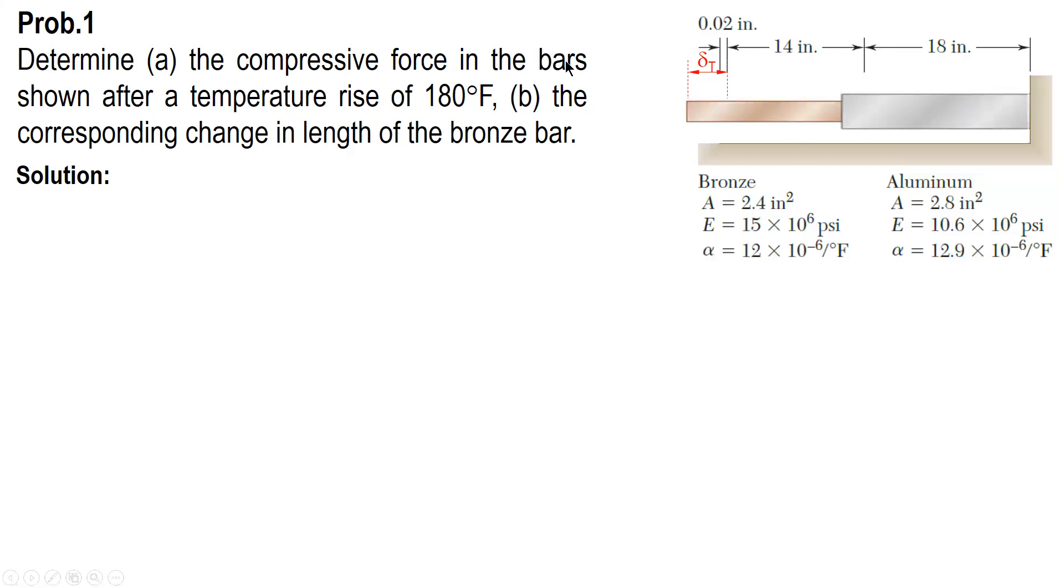And we can solve for delta T. The formula of delta T is alpha times L times delta T. Sum for bronze and aluminum. Given all the values, coefficient of thermal expansion for each bar and then length as well as the change in temperature.